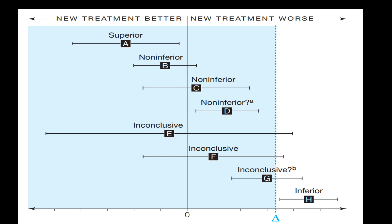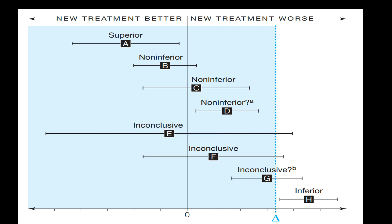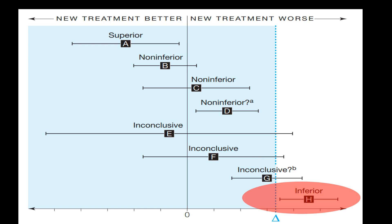It also can result from a non-inferiority margin that is too wide. In other scenarios, if the confidence interval includes the non-inferiority margin and zero, the difference is non-significant but the result regarding non-inferiority is inconclusive. If the confidence interval includes the non-inferiority margin and is wholly to the right of zero, the difference is statistically significant but the result is inconclusive regarding possible inferiority of that magnitude or worse. Finally, if the confidence interval is wholly above the non-inferiority margin, the new treatment is inferior. These visual representations help us understand the complex outcomes that can arise in non-inferiority trials, and are a reminder that the reality can be much more nuanced.